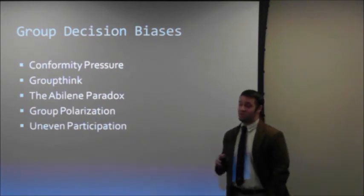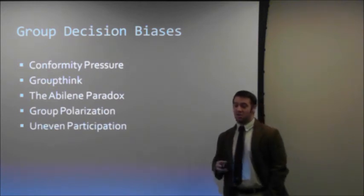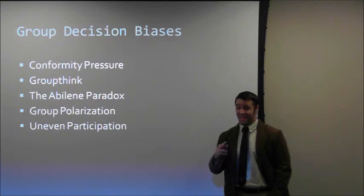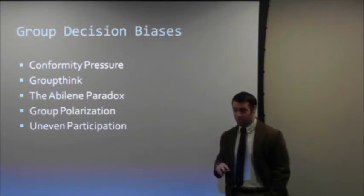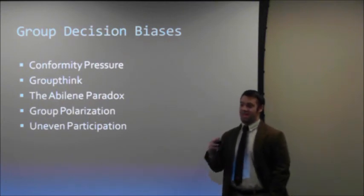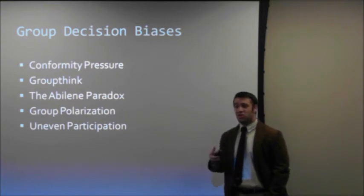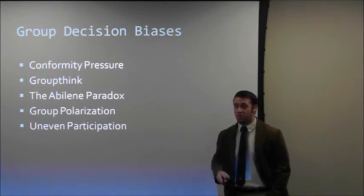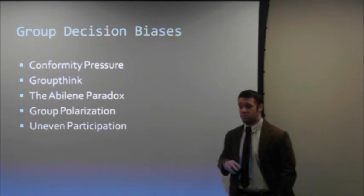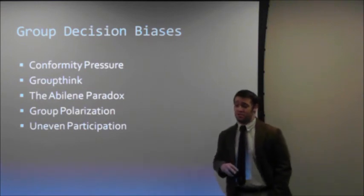We also have uneven participation, also known as social loafing, and this is something we all have been familiar with at one time or another. In a group, about 10-20% of group members do about 70-80% of all the talking. Simply put, in a group, people don't work as hard as they do alone. We rely on other group members to do the work for us rather than to do it ourselves.